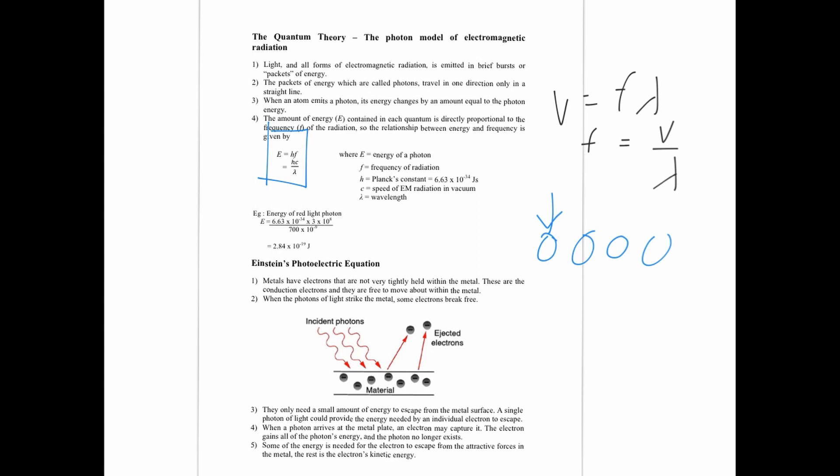Einstein's key assumption is that every photon can only interact with one electron at a single time. You cannot have multiple photons absorbed by one electron simultaneously — only one photon is absorbed by one electron at a time. If the energy contained by the photon is sufficient for the electron to escape, it will escape. But if the energy is not enough, it will not escape, and the energy will be used up before a second photon can be absorbed.